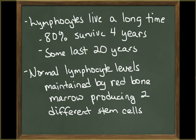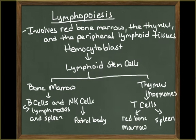Lymphocytes typically live a long time. About 80% survive 4 years, and some last 20 years or more. Normal lymphocyte levels are maintained throughout your life because your body produces new lymphocytes in the red bone marrow and the lymphoid tissues. Lymphocytes are produced in a process called lymphopoiesis, which involves the red bone marrow, the thymus, and the peripheral lymphoid tissues. This process begins in the red bone marrow where a stem cell called a hemocytoblast divides to become a lymphoid stem cell, which will then differentiate into all types of lymphocytes.